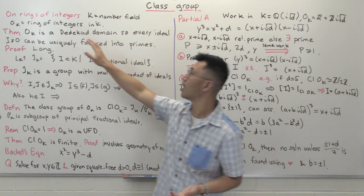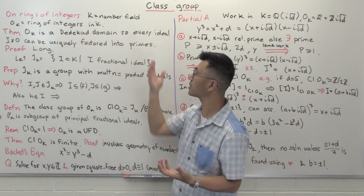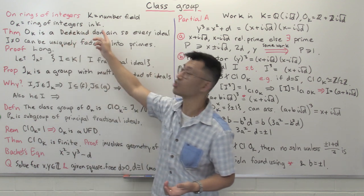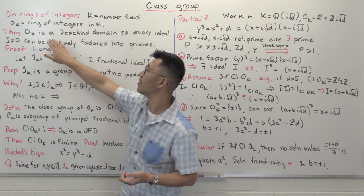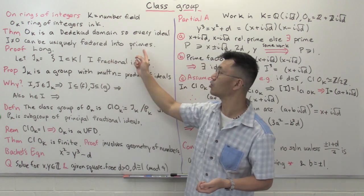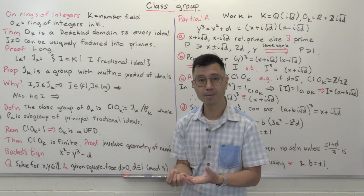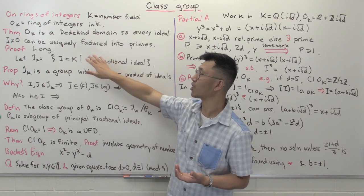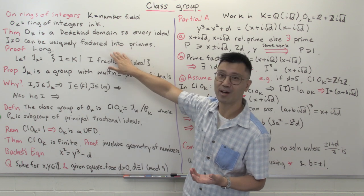Let k be our number field — that just means some finite field extension of the rational number field — and Ok is going to be the ring of integers inside k. The first theorem is that Ok is a Dedekind domain, so every non-zero ideal i can be uniquely factored into primes. You might not necessarily have prime factorization of elements into primes, but on the level of ideals you can. Unfortunately the proof is too long to contain here; it will take several videos, so I'll leave that for another day.